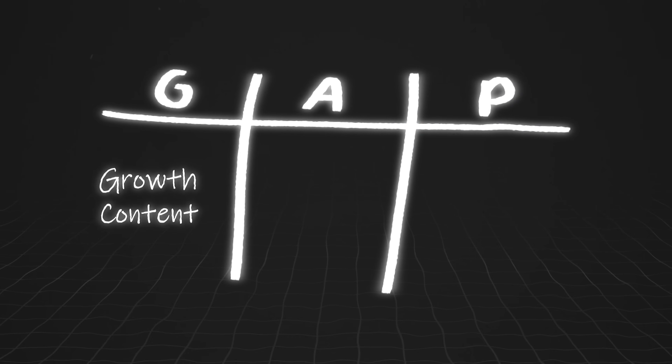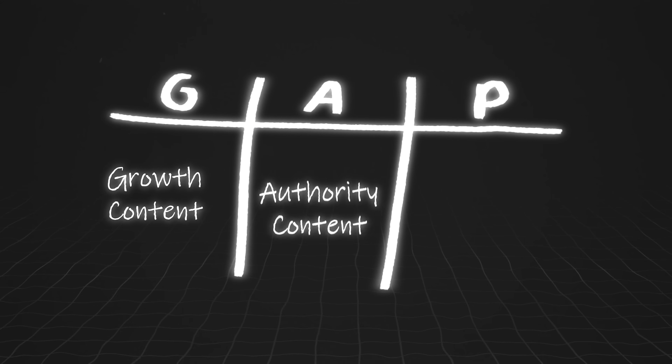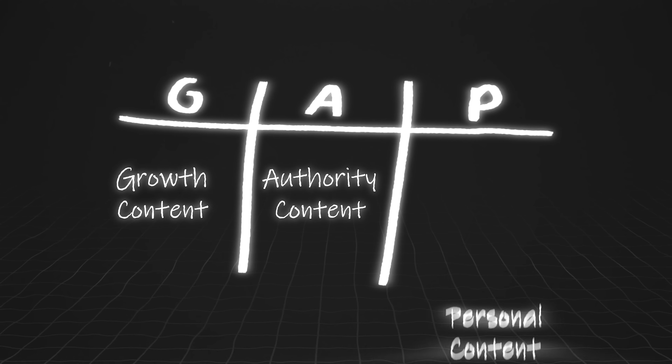The G stands for growth content — content that gets people to know about you. The A stands for authority content — content that gets people to trust you. And the P stands for personal content — content that gets people to like you. This is why other people who teach ChatGPT frameworks for content simply don't work. They think volume of content is what matters, but they don't consider quality, nor do they know how to make quality content.